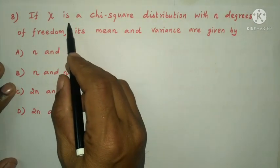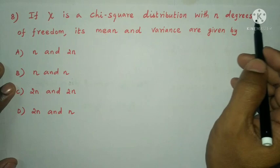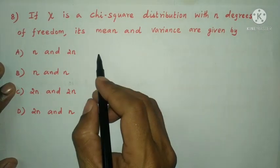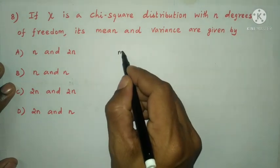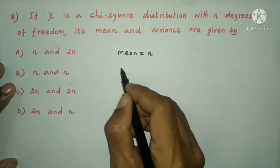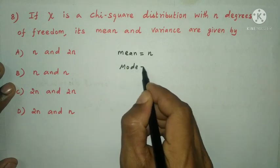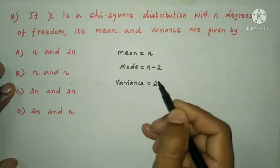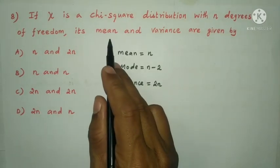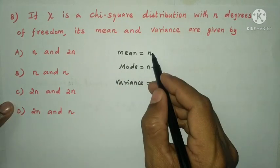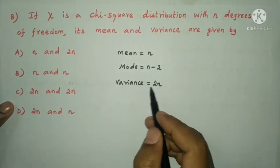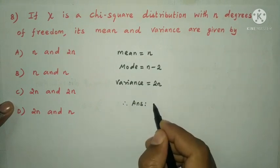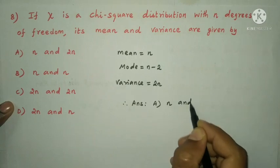Next question: if X is a chi-square distribution with n degrees of freedom, its mean and variance are given by? For chi-square distribution, mean = n, mode = n - 2, and variance = 2n. So the mean is n and variance is 2n. The answer is option A, n and 2n.